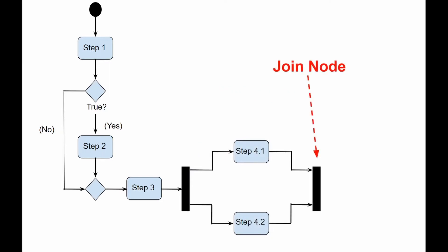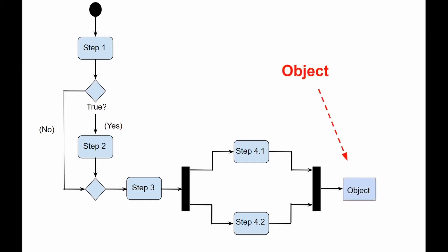Join node: it combines several parallel flows, usually separated by a fork node. Object: it represents an object in a thread that is being acted upon.